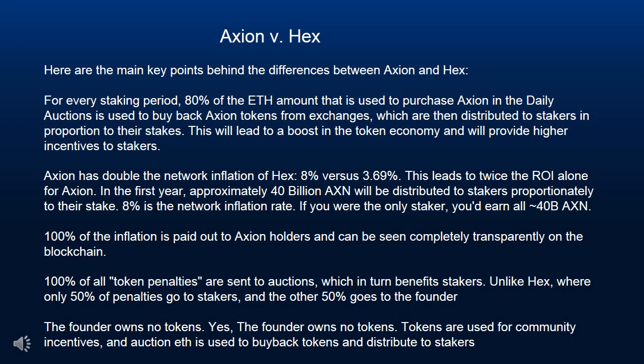Axion v. HEX: Here are the main key points behind the differences between Axion and HEX. For every staking period, 80% of the ETH amount that is used to purchase Axion in the daily auctions is used to buy back Axion tokens from exchanges, which are then distributed to stakers in proportion to their stakes.